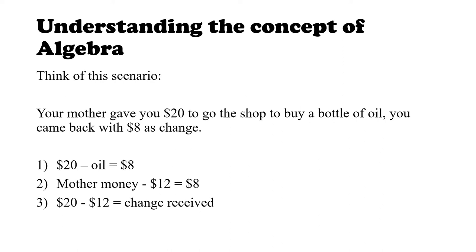And this is the whole foundation of algebra. There is always an unknown. In the first one, oil is unknown. In the second one, the mother's money is unknown — something we don't know in the question but that we could find out. And that's the beauty of it. Whatever is not known could be found out, but there is always an unknown entity. And even the change received is unknown because we have to compute — we have to do something to figure it out.